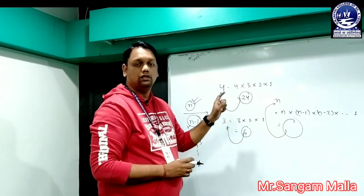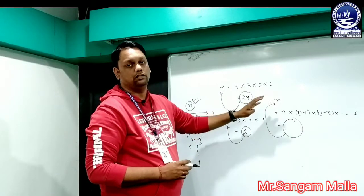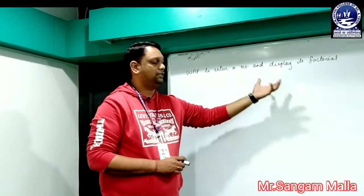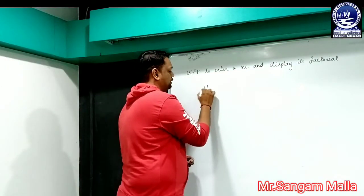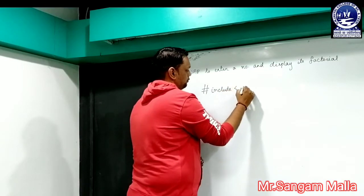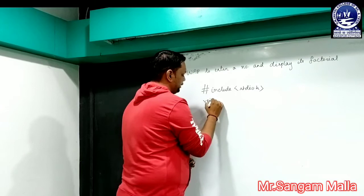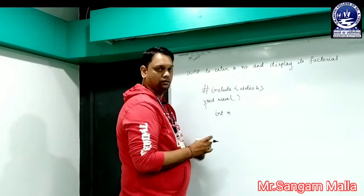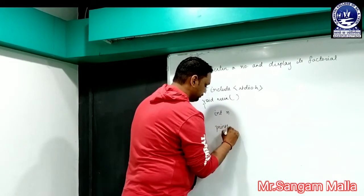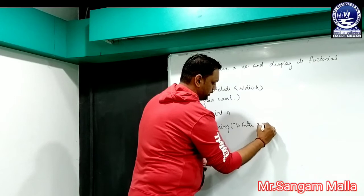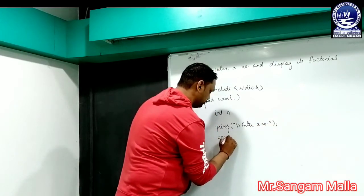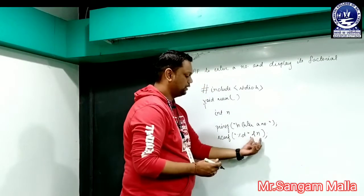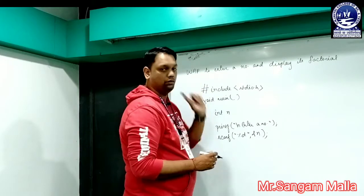Now we will describe how to write a program to calculate the factorial of a number. We will write a program by taking an example: enter a number and display its factorial. Moving on to the program, we will start with #include stdio.h, then comes our void main. First of all, we will take a variable n to enter a number. We will write printf "enter a number" and then enter the number using scanf with format specifier %d and &n.